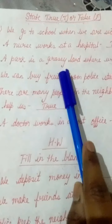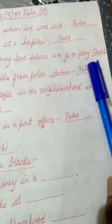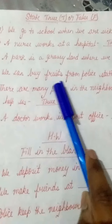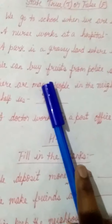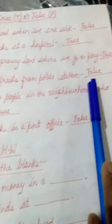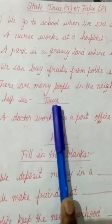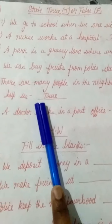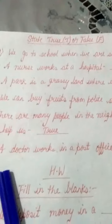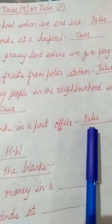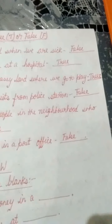Number 3: a park is a grassy land where we go to play — true. Number 4: we can buy fruits from a police station — that is absolutely wrong, so false. Number 5: there are many people in the neighborhood who help us — true, people live near our house to help us. Number 6: a doctor works in a post office — no, that is false. Copy down these true-false answers quickly.